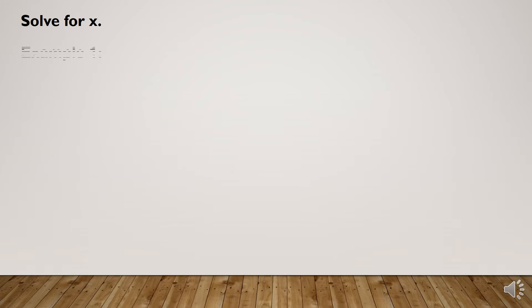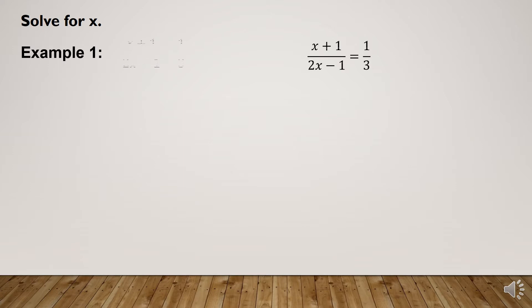Solve for x. Example number 1: Given the rational equation (x + 1) / (2x - 1) = 1/3. To find the value of x that satisfies the given rational equation, first we need to find the least common denominator or the LCD of the given rational equation.